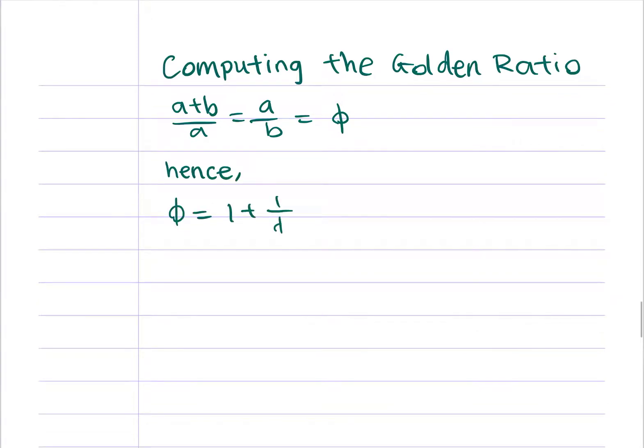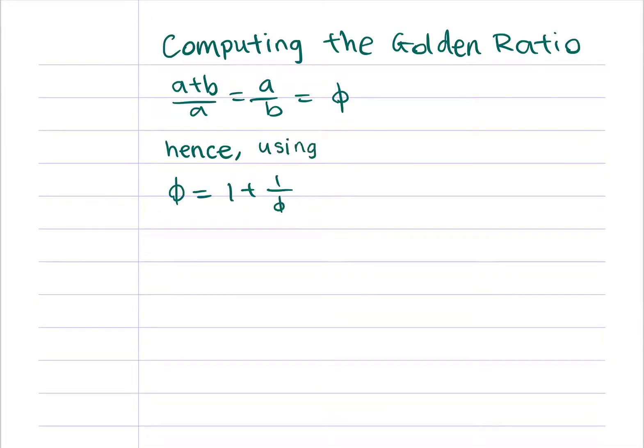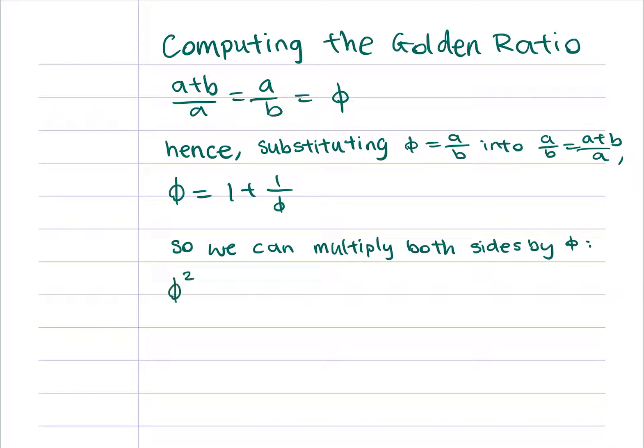So, from the equation we just wrote down, I can substitute phi equals a over b into a over b equals a plus b over a to get 1 plus 1 over phi equals phi. Now, all we have to do is multiply both sides by phi and we get phi squared equals phi plus 1.